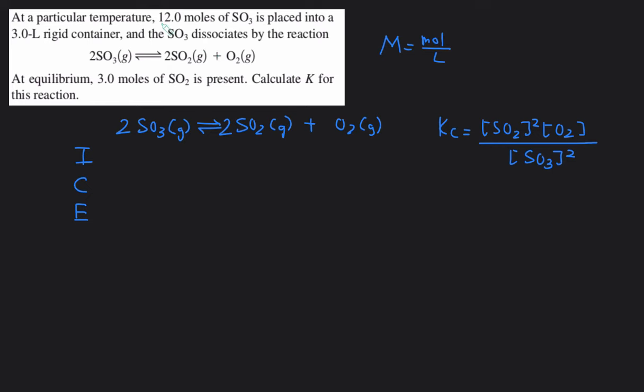Since this is moles, we can't plug that in. We have to convert that to molarity. And molarity is moles per liter. So the initial concentration of SO3 is going to equal 12.0 moles divided by the 3.0 liters and that'll give us 4.0 molar.